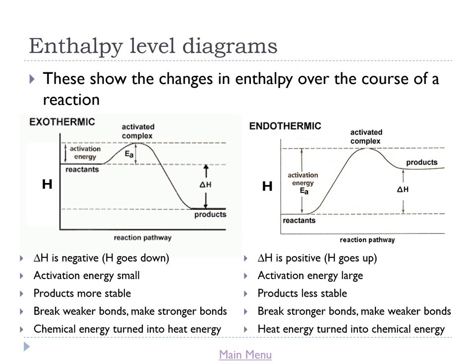Enthalpy level diagrams are very similar to the reaction profiles you saw earlier. Instead of energy on the y-axis, we've got enthalpy H. In the case of an exothermic reaction, we've got a high level of enthalpy for the reactants and a low level for the products, and the difference between them is the enthalpy change. Because the enthalpy has decreased, we have a negative enthalpy change. Whenever we see a negative enthalpy change, that tells us a reaction is exothermic.